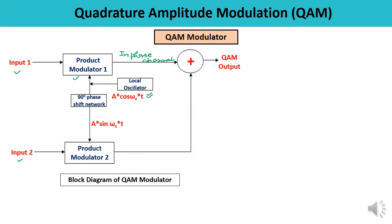In the lower section, there is product modulator two with the local oscillator signal that is 90-degree phase shifted, and this is known as the quadrature channel. So here you can observe the two channels: one is the in-phase channel and the second is the quadrature channel. The outputs of the in-phase and quadrature channels are summed up in a summer, and at the output we get the QAM — quadrature amplitude modulated — signal.